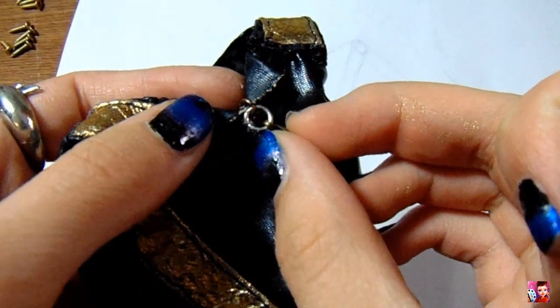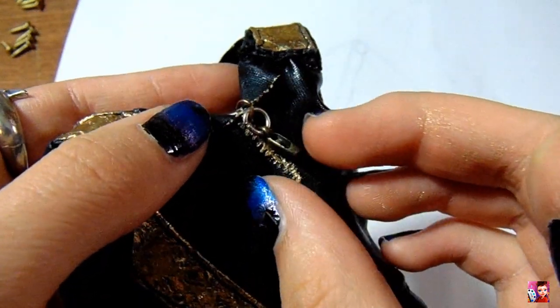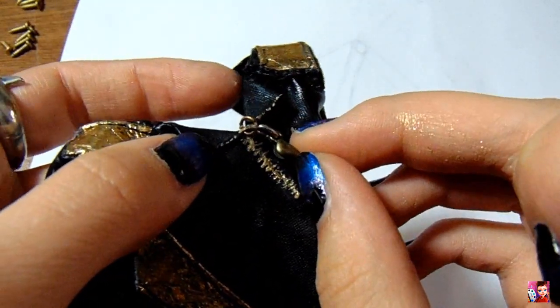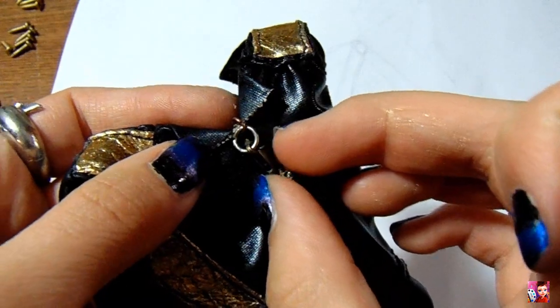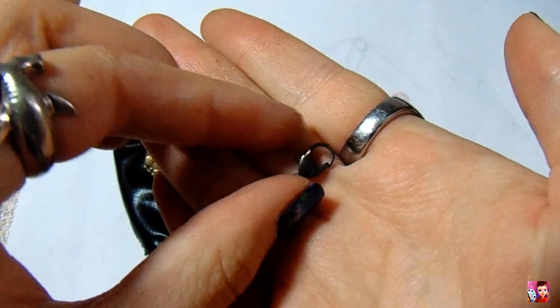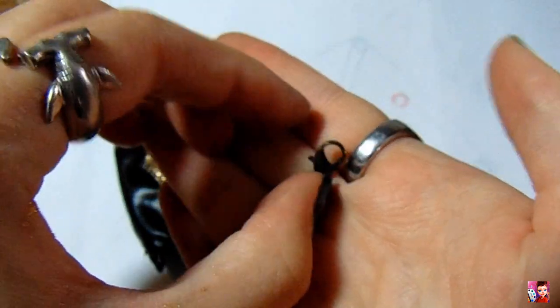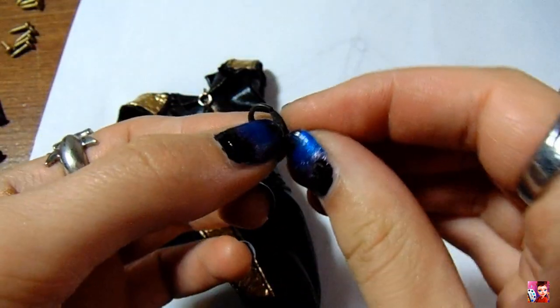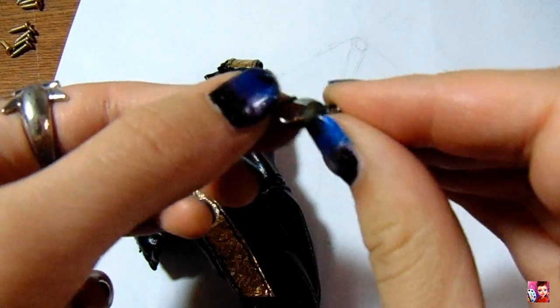For the zipper, I clipped two jump rings together and a broken necklace clasp. I remember when this clasp broke. I was working on something and it just kind of fell apart in my hands. But I kept it in case I might do something with it later. And you know what? It worked out pretty well, I gotta say.